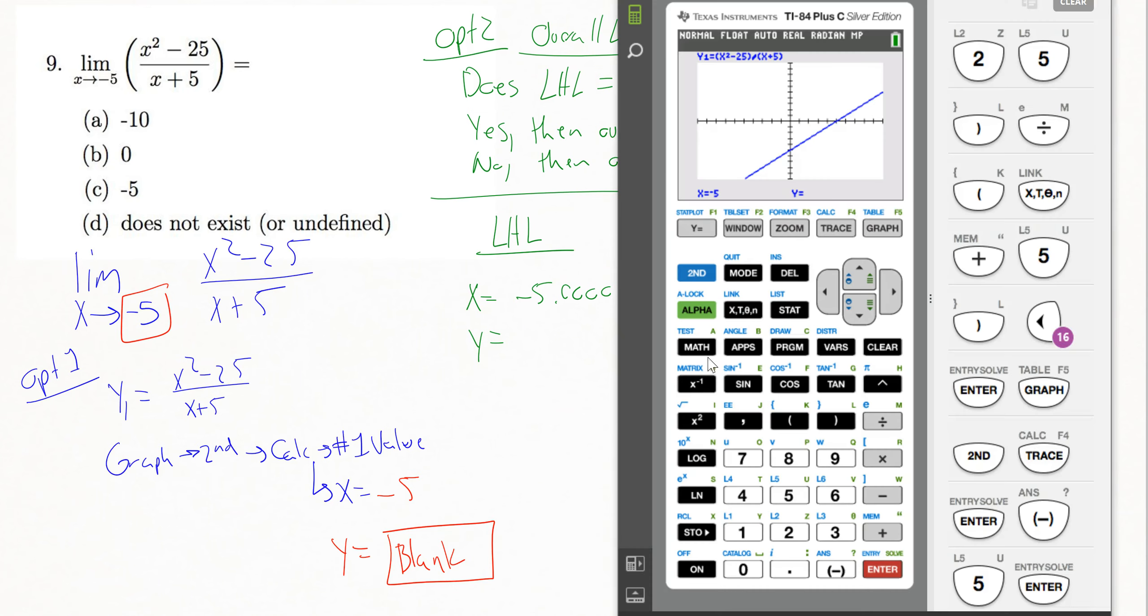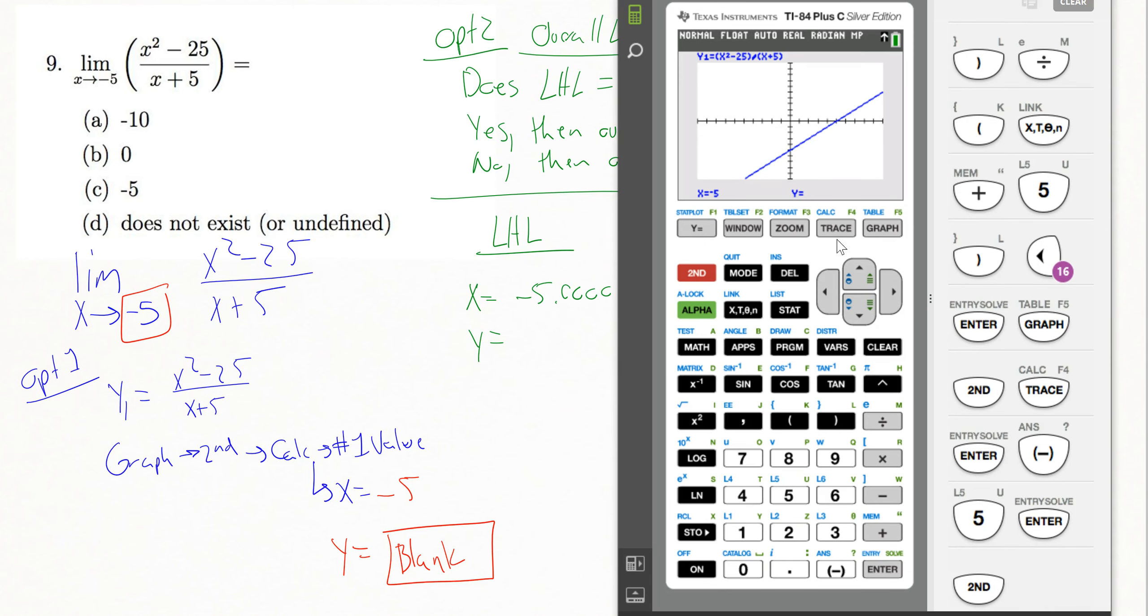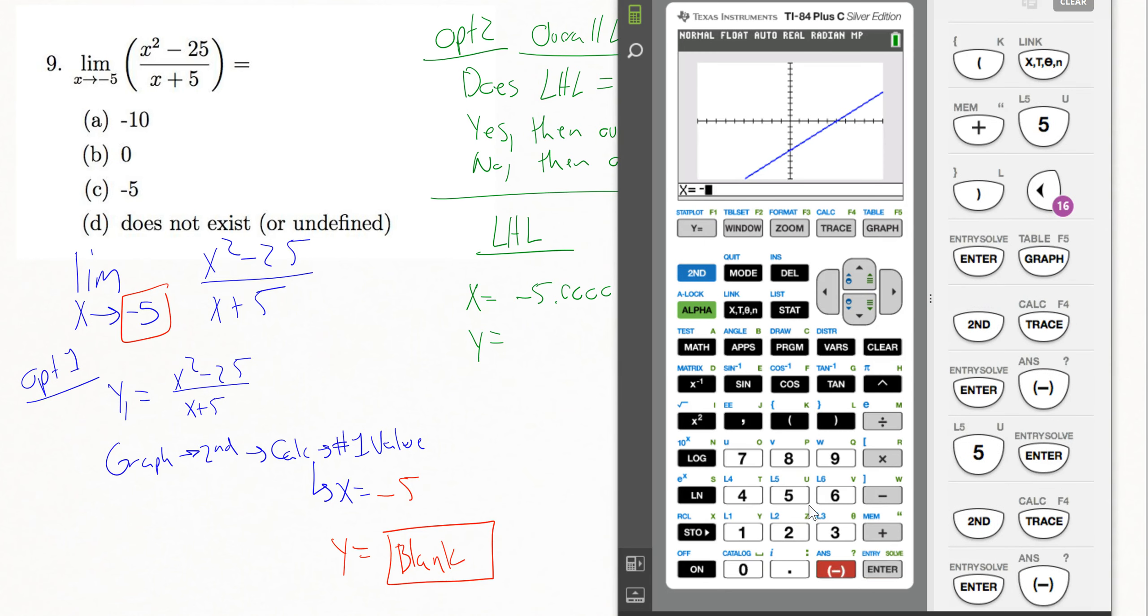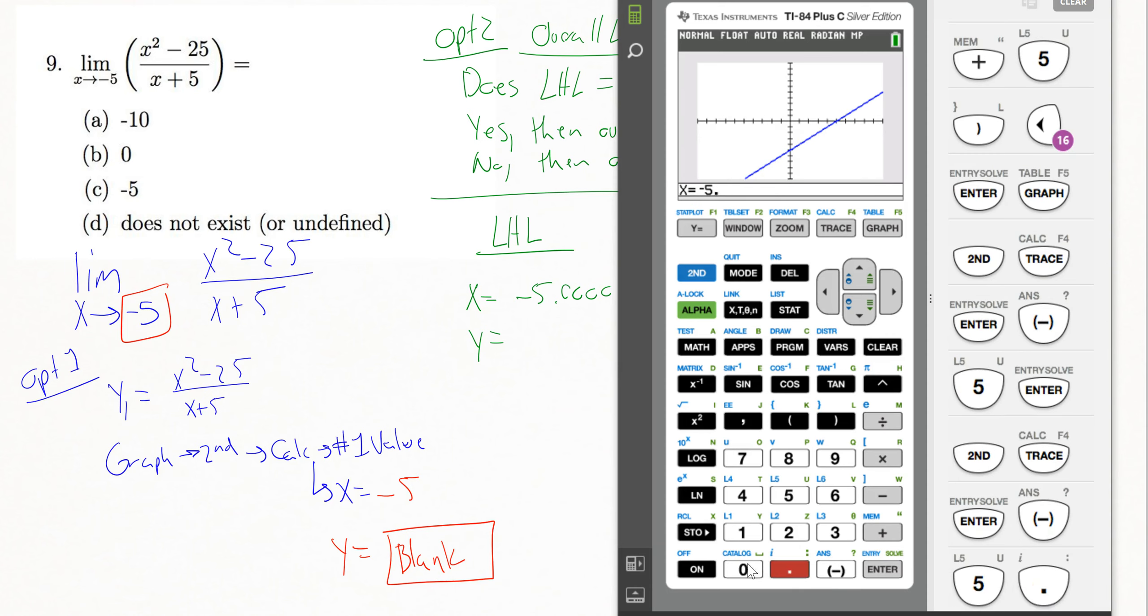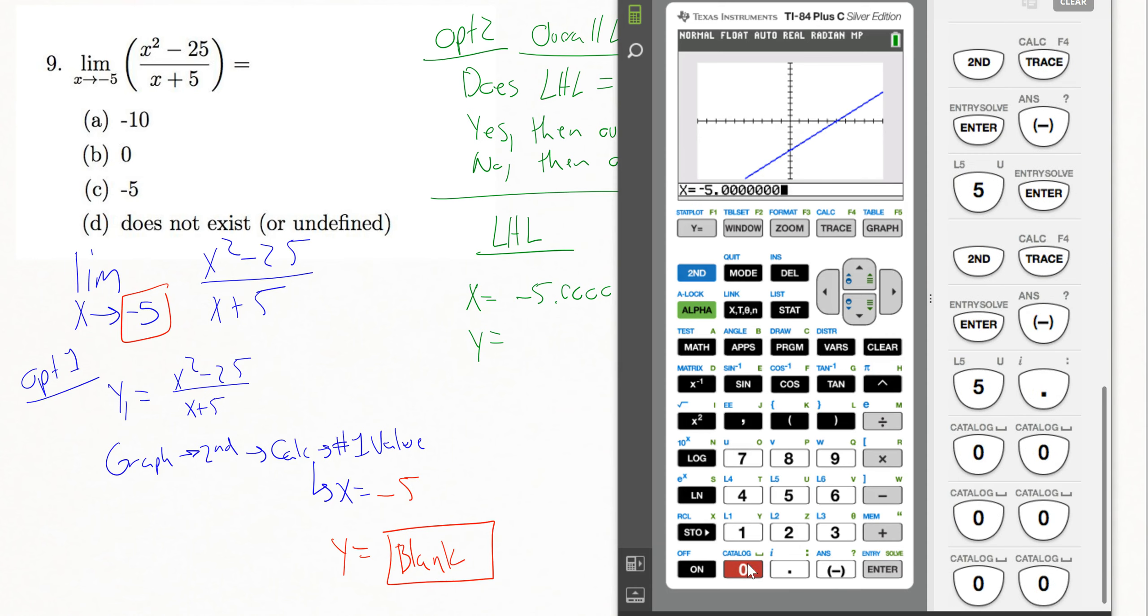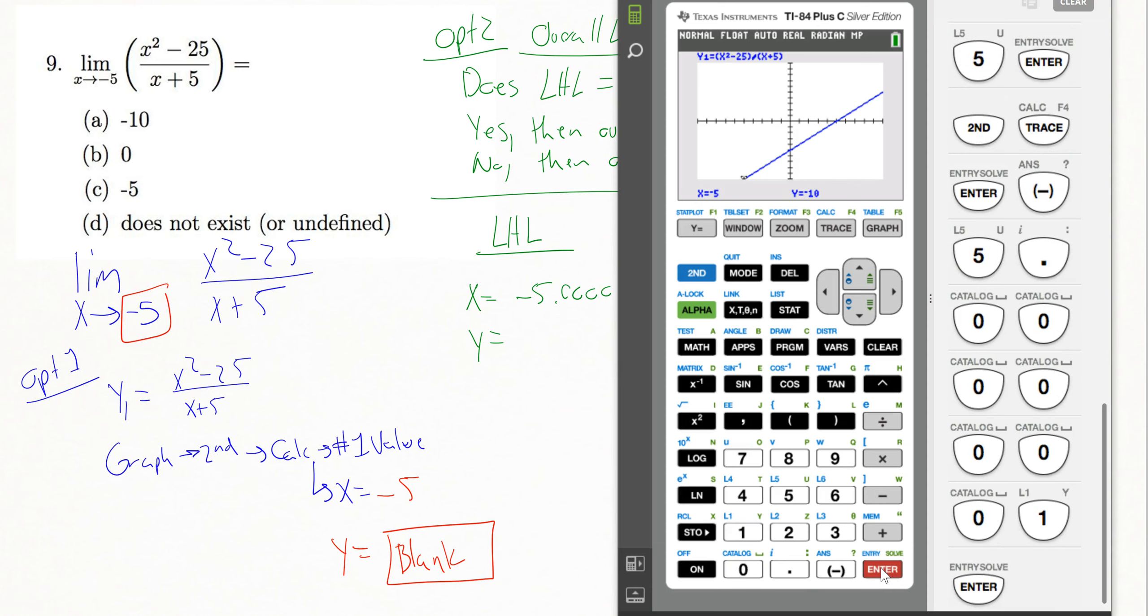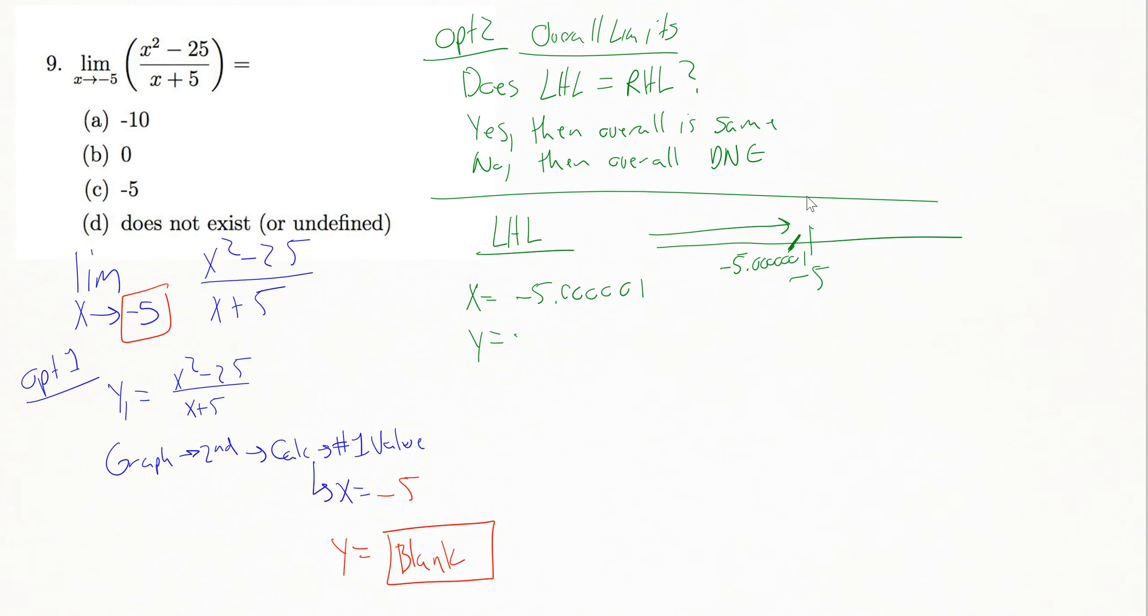So I go back to my calculator. I've already got the equation I want. I just want to test a different value. So second calc and then number one value. I'll type negative 5, point, and then just as many zeros as you want to type in, and then a 1, and hit enter. Out of there, my calculator is telling me that I've got a y value equal to negative 10. So that lets me know that my left-hand limit was equal to negative 10.